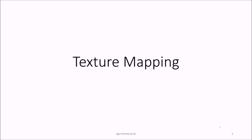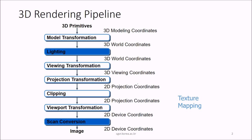Let us see the texture mapping in computer graphics today. We have discussed the 3D rendering pipeline — let me recall it for you. First, we have 3D primitives in 3D modeling coordinates. Then model transformation is done to bring them into world coordinates, then lighting is applied in 3D world coordinates, and viewing transformation is done here.